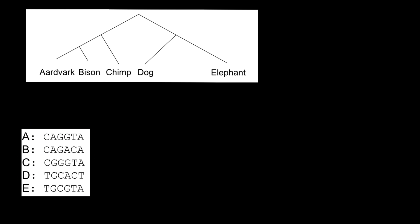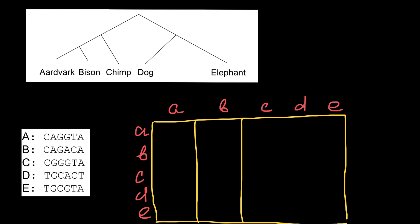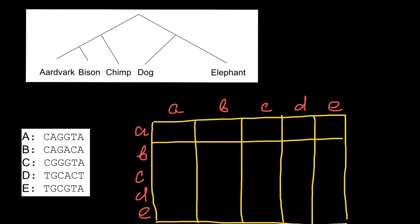We should start with building a table. So we have species A, B, C, D, and E — and we also plot here A, B, C, D, and species E. We are going to compare sequences of all five species, so our table is going to be five columns and five rows, totaling 25 cells. But we are not going to use all 25 cells, and I'm going to show you why in just a moment.